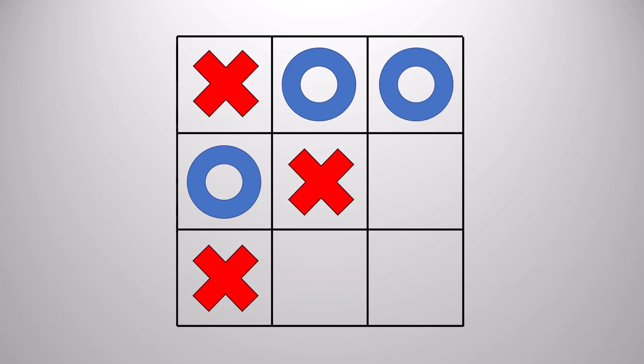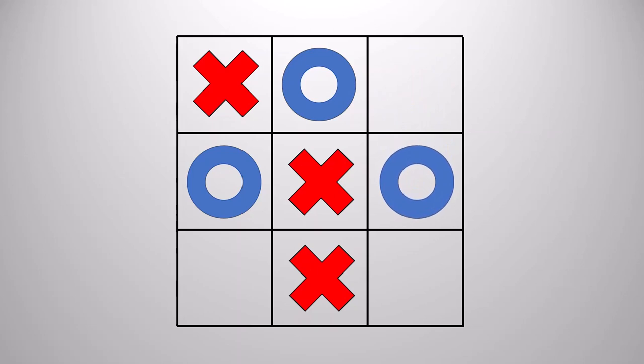Do you see why? If you move the bottom left X over by one, no matter what your opponent does, you'll be able to move it over one more square afterward and complete three in a row diagonally.